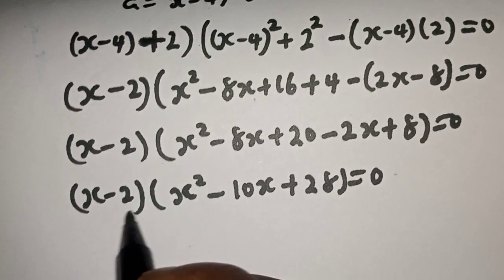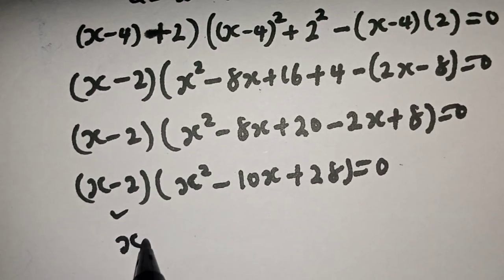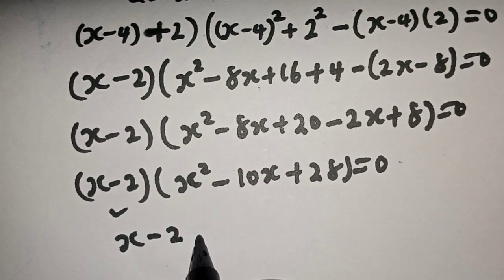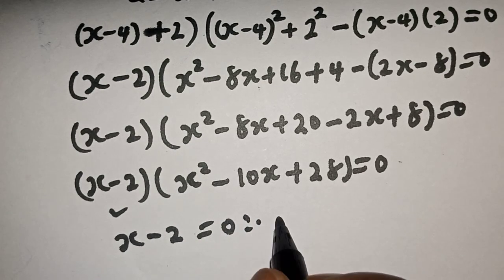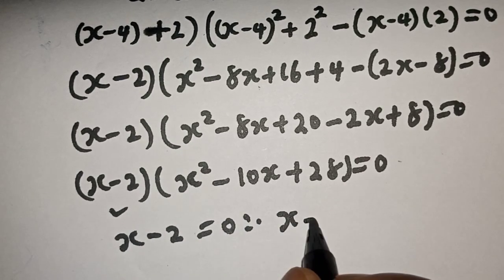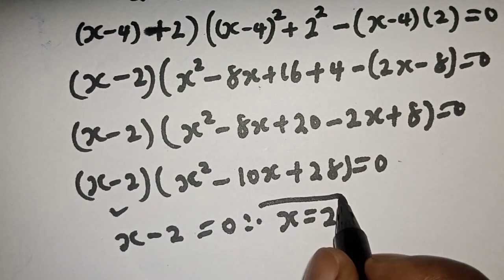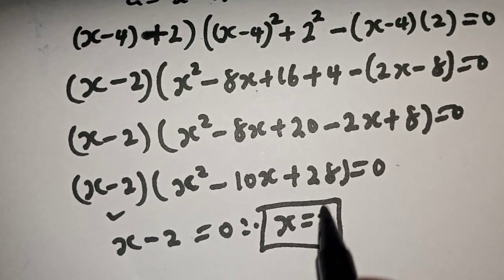There are two cases here. The first case is x minus 2 is equal to 0. Therefore, x is equal to 2. This is the first value of x.